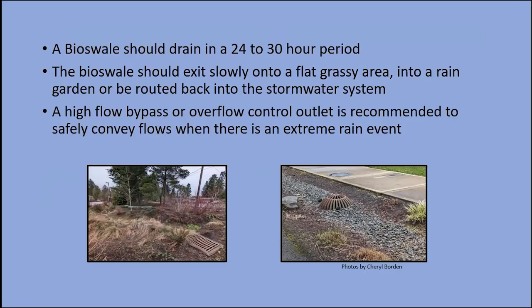A well-designed bioswale should drain completely in a 24 to 30 hour period. Water should exit onto a flat grassy area, into a rain garden, or be routed back into the stormwater system. A high flow bypass or overflow control outlet is recommended to safely convey flows. There are two types shown: a grate leading to a pipe directing into the stormwater system, and a typical beehive, which is found more often in residential areas. You should always plan for high flow bypasses in the event of an extreme rain event.